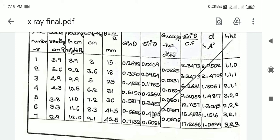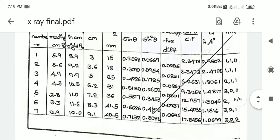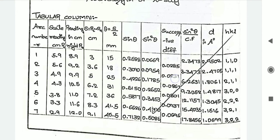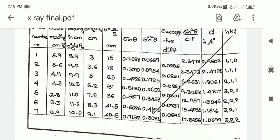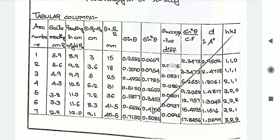For the successive difference column: subtract the first sine squared theta reading from the second. That gives the first successive difference. Then third minus second gives the second successive difference. Similarly, fourth minus third, fifth minus fourth, sixth minus fifth, and seventh minus sixth. This column will have only six readings — one reading will not be present. That is called successive difference. Among these, the least value is called CF — the common factor or lowest common factor. Next, divide all seven sine squared theta readings by this CF to get the sine squared theta divided by CF column.